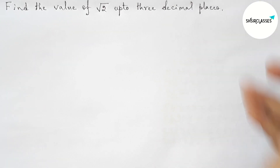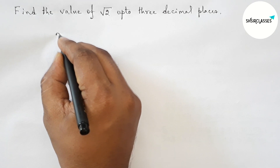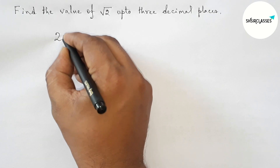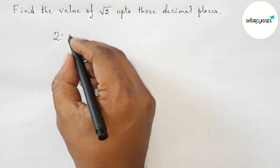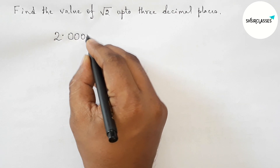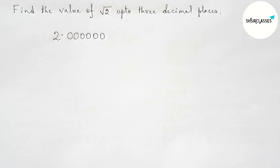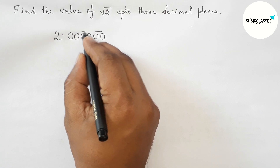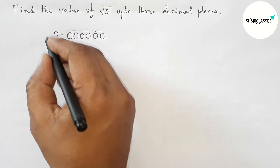First of all, let us solve this problem. Write down the 2, then take a decimal point. We have to find the value of root 2 up to three decimal places, so we take six zeros and mark them as pairs. Here we got three pairs of zeros.